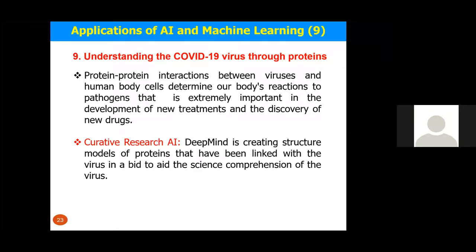The ninth scope is bioinformatics — understanding COVID-19 virus proteins. The protein-protein interaction between the virus and human body cells determines our body's reactions to pathogens. Detecting this interaction is important for developing new treatments and drugs. For example, DeepMind is creating structural models of proteins linked with the virus to build comprehensive scientific knowledge about the virus, and has shown some success.